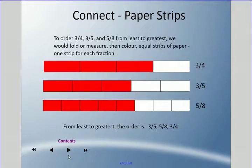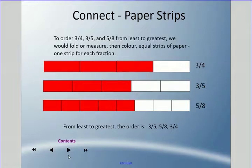If I wanted to order three quarters, three fifths, and five eighths from least to greatest, we would fold or measure then color equal strips of paper. The key is you need equal strips of paper, then divide into that many parts. This could work but there might be a lot of measuring. Looking at these three fractions, which one is the smallest?